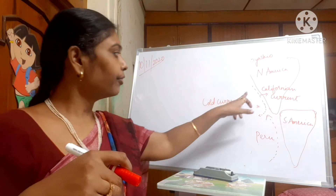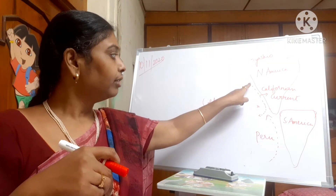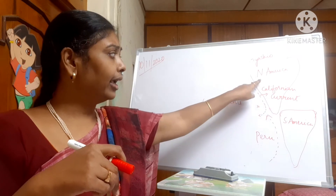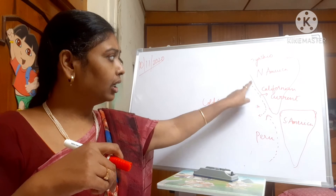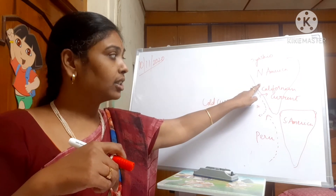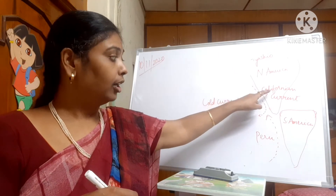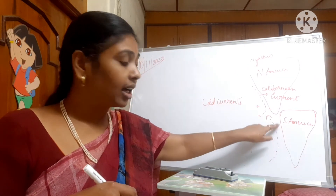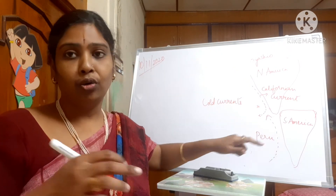There are also cold currents of the Pacific Ocean which keep the hot Californian area cool — this is the Californian current. There is also the Peru current near the San Jose area and the Atacama Desert, and these currents keep those areas cool.